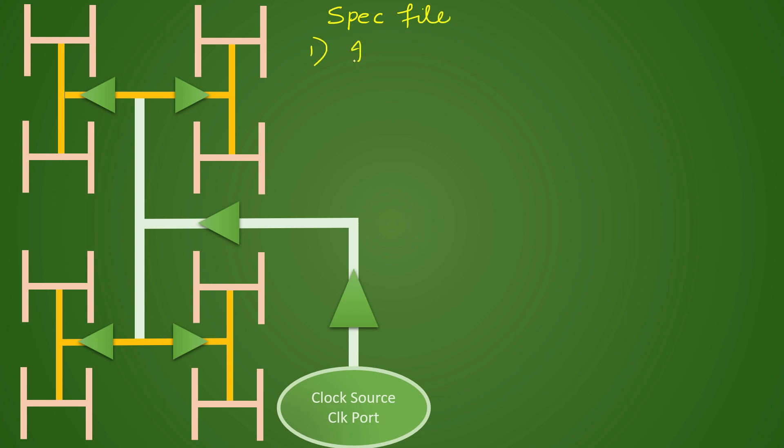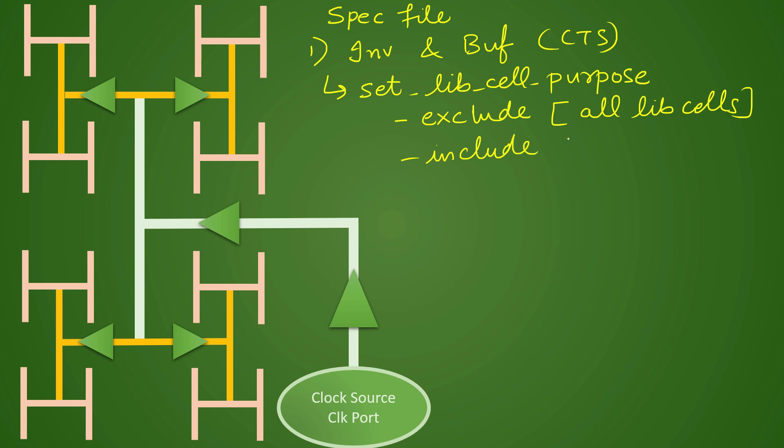The first thing contained in the spec file is the list of inverters and buffers that the tool will use for building the CTS. The command will be set_lib_cell_purpose which specifies the purpose of cells. Generally what we do is first we will exclude all library cells first, and after that we include only our CTS cells.